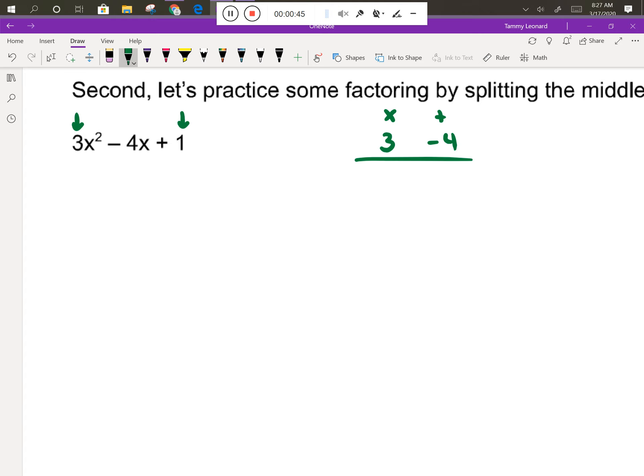Well, there aren't a lot of things that multiply to make 3. So 3 times 1 would give me 3, and 3 plus 1 is 4. That's almost right. I need the -4 instead of the positive 4. If I multiply two negative numbers together, I still get a positive number. And if I add those together, notice I do get a -4. So I need -3 and -1.